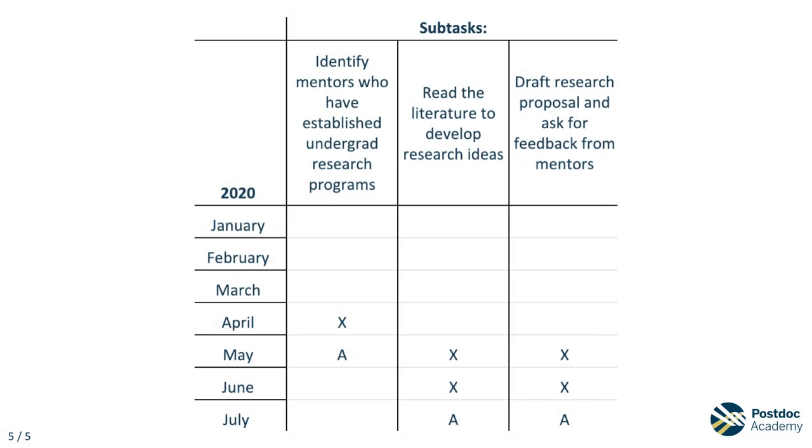Now, attach a time frame to each subtask. Don't forget to mark down a time when you'll assess your progress on each subtask — indicate assessment as an A. In our example, the subtask of synthesizing the relevant literature will take place over two months after the semester ends, and she will assess her progress during the summer. Think about when you expect to work on each subtask and how long each one might take. This is a great place where you can get feedback from your mentor if you're unsure.